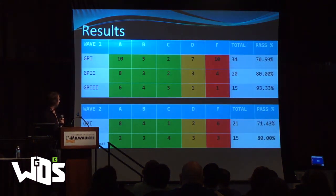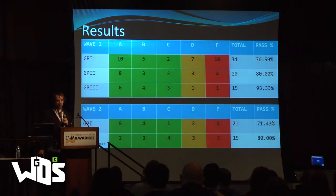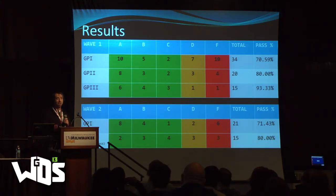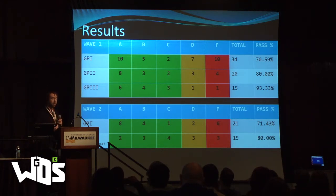So, the results. Admittedly, during the first round of Game Programming 1, it was a little rocky. Out of 34 students, 10 dropped the class — partly due to it being the first time it was taught, and partly due to students not turning assignments in. The pass rate was only about 70.5 percent. In Game Programming 2, it got a little better at 80 percent. In Game Programming 3, we actually got as high as 93.33 percent. So retention was good and pass rates were good.